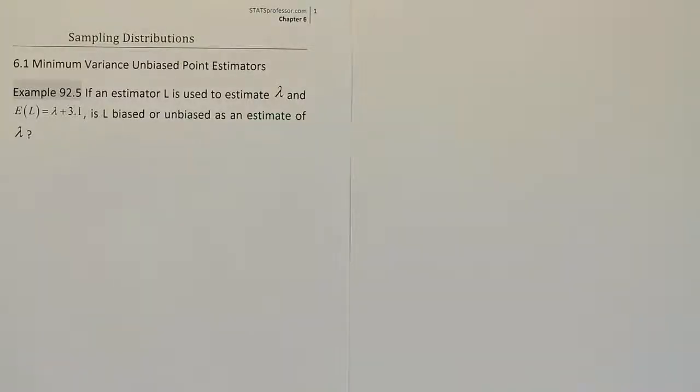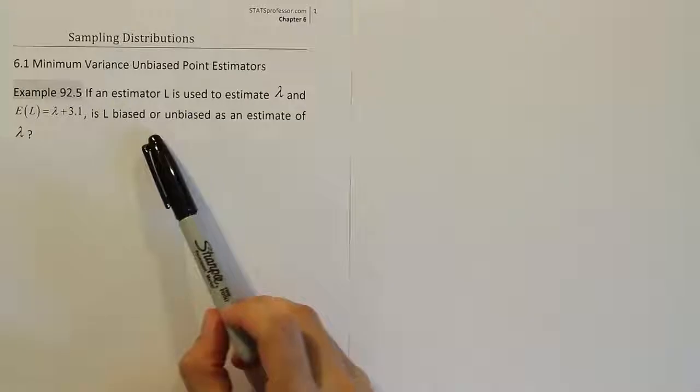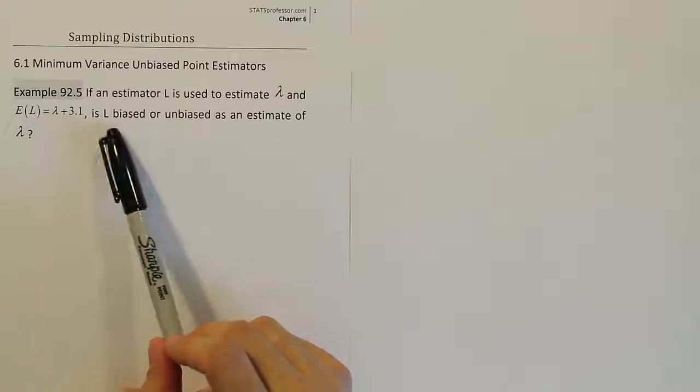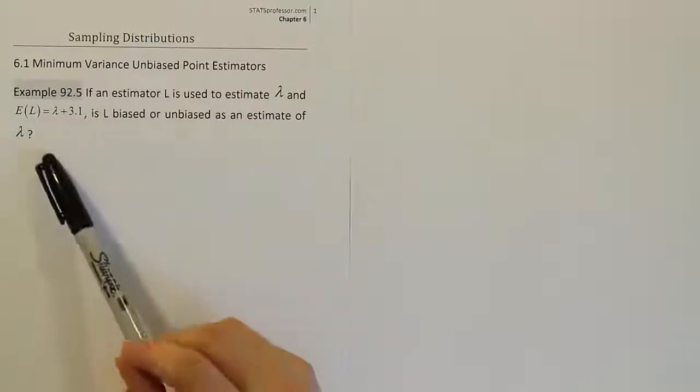Example 92.5. If an estimator L is used to estimate lambda and the expected value of L is equal to lambda plus 3.1, is L biased or unbiased as an estimate of lambda?